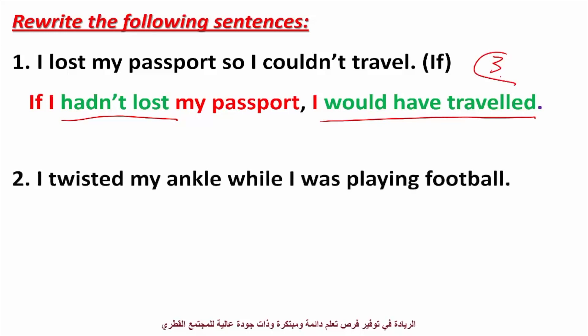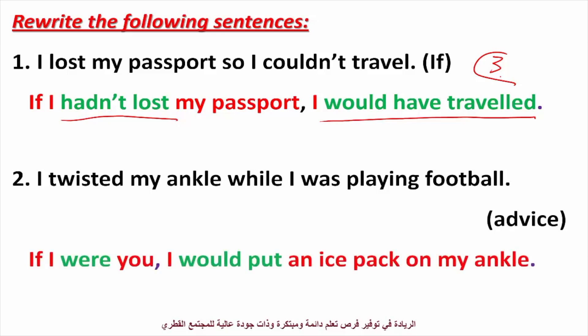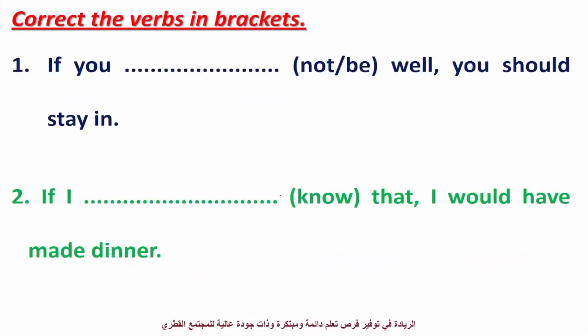Next sentence: 'I twisted my ankle while I was playing football.' When you give advice using type two, you use 'were' in the if clause and 'would' in the main clause. Now correct the verbs in brackets: 'If you are not well, you should stay in.' That's first conditional. And: 'If I had known that, I would have made dinner.'